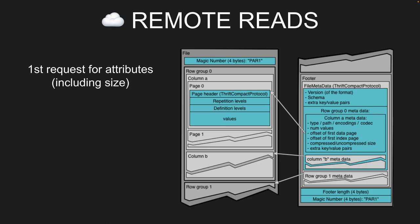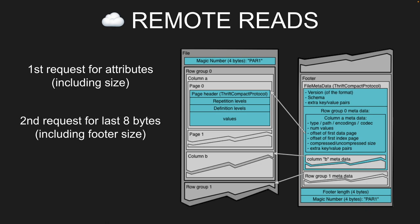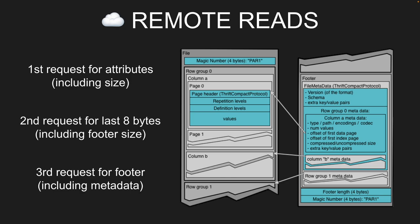Once you have the footer, you have all the metadata, the schema, and statistics about the row groups. This is what lets readers be efficient about excluding certain row groups — if you have that footer data, you know which row groups to exclude. You can even go further and get page statistics and limit which columns are read, allowing reads to be efficient and work well in the cloud.